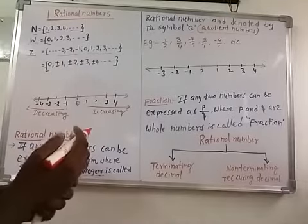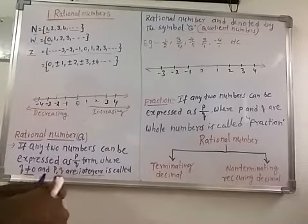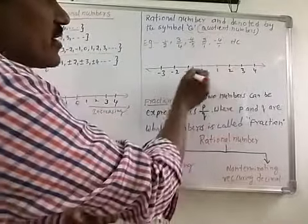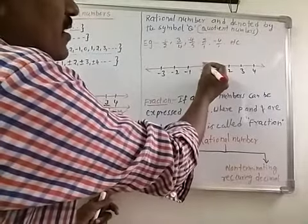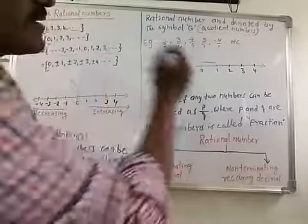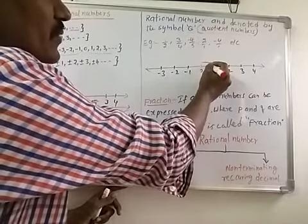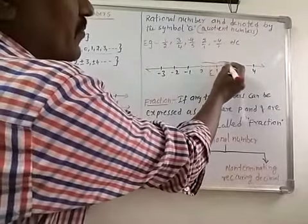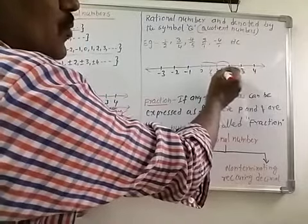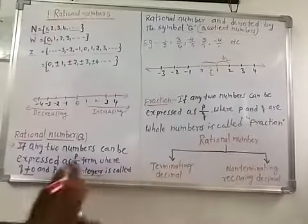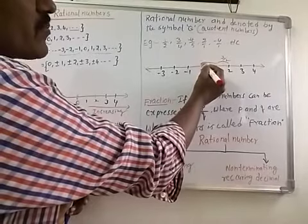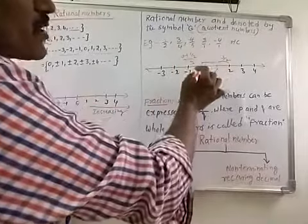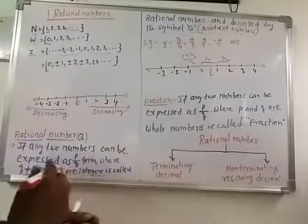We can also represent rational numbers on a number line. On a number line with 0, 1, 2, 3, −1, −2, −3, the rational number between 0 and 1 is (0 + 1)/2 = 1/2. The rational number between 1 and 2 is (1 + 2)/2 = 3/2. The rational number between 0 and 1/2 is (0 + 1/2)/2 = 1/4.